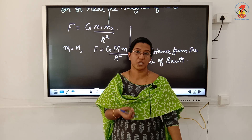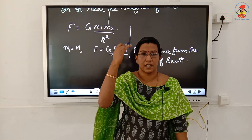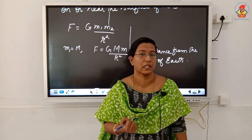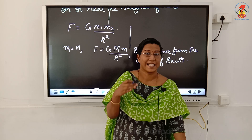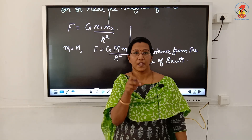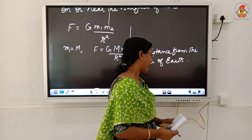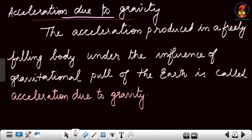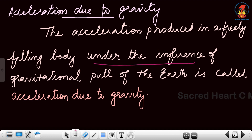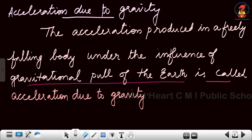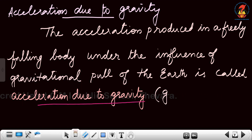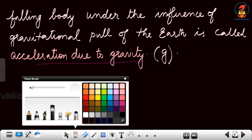If we throw an object upwards, it reaches a particular height, its velocity becomes zero, then it comes down because of the gravitational pull of the earth. As the object is coming down, its velocity keeps increasing per second, so it is having an acceleration, and this acceleration is known as acceleration due to gravity. It is the acceleration produced in a freely falling body under the influence of gravitational pull of the earth, and it is denoted by the small letter g. g is a vector quantity.